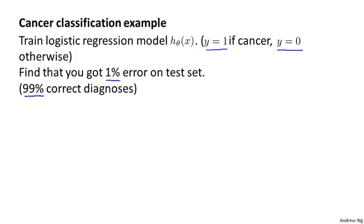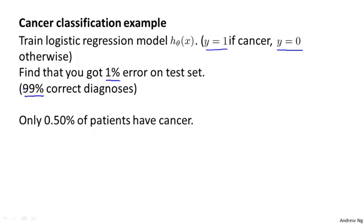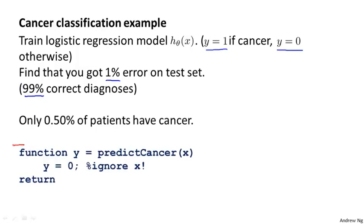So we're making 99% correct diagnoses — seems like a really impressive result, correct 99% of the time. But now let's say we find out that only 0.5% of patients in our training and test sets actually have cancer. In this case, the 1% error no longer looks so impressive. Here's a piece of non-learning code that takes the input features x, ignores them, and just predicts y equals 0 — nobody has cancer — all the time.